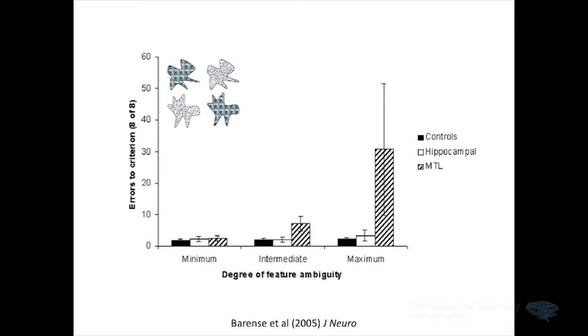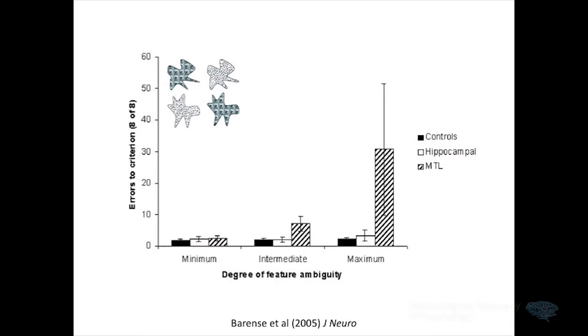We manipulated feature ambiguity in many different ways — morphed stimuli together, did all sorts of things — and over and over again in our animal models we found this connection, an impairment after perirhinal cortex damage whenever we manipulated feature ambiguity. Of course these animals are models for humans, so we subsequently looked at performance of humans on these tasks — with Kim Graham and Morgan Behrens in Cambridge. We tested patients on exactly the same task as the monkeys. We had two groups of patients. It's very rare — almost impossible — to find patients with damage restricted to perirhinal cortex, which is one reason we do animal studies where we have more control over the damage.